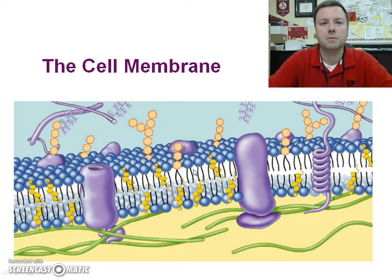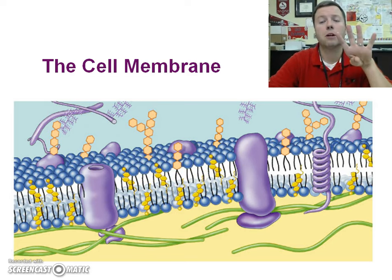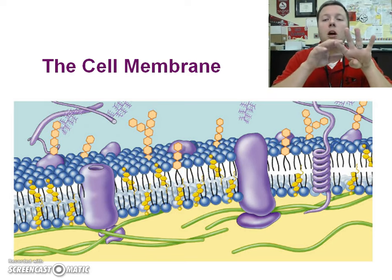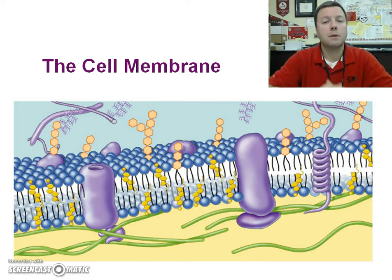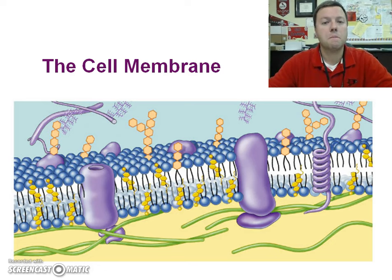If you remember back to September, we talked about our four major organic macromolecules: carbs, lipids, proteins, and nucleic acids. One of those types of lipids was a phospholipid, which is the main or primary component of cell membranes.